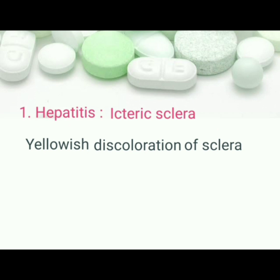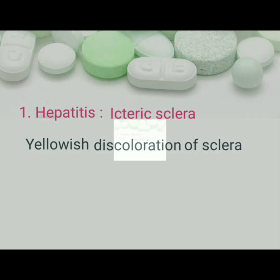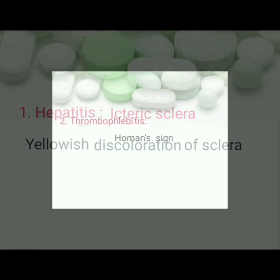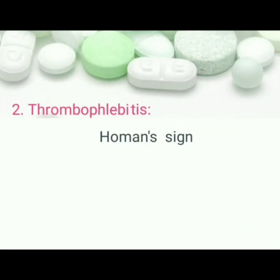Hepatitis: pathognomonic sign is icteric sclera, that is yellowish discoloration of the sclera. Thrombophlebitis: pathognomonic sign is Homan's sign.